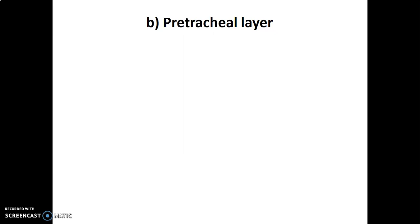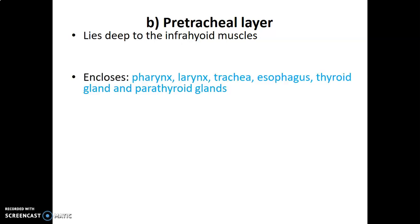From the investing fascia, we move to the pretracheal layer. This is fascia that lies deep to the infrahyoid muscles — muscles that are below the hyoid bone, such as sternohyoid, sternothyroid, and omohyoid. The pretracheal layer is just deep to these muscles and it encloses the pharynx and its continuation the esophagus, the larynx and its downward continuation the trachea, as well as the thyroid and parathyroid glands.